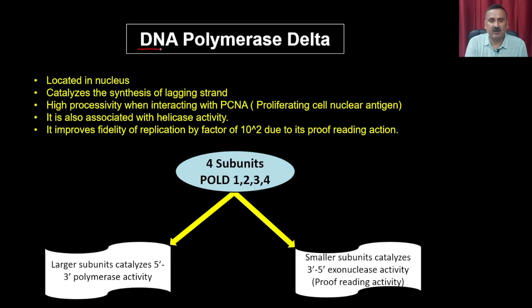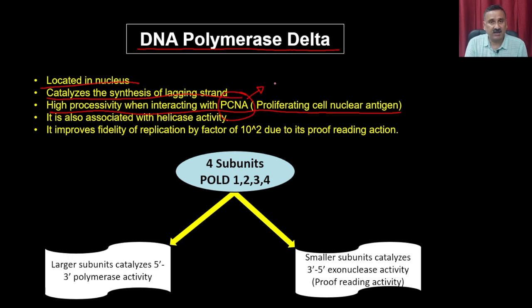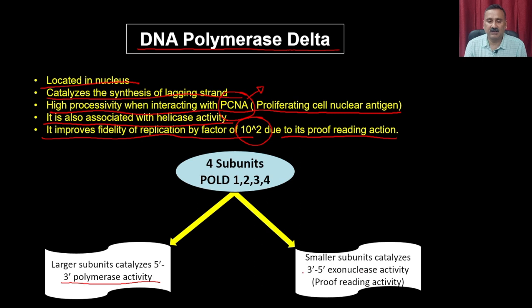DNA polymerase delta is localized in the nucleus and catalyzes the synthesis of the lagging strand. It has high processivity when interacting with PCNA — the proliferating cell nuclear antigen — which plays a critical role in DNA damage and repair. It is also associated with helicase activity and improves fidelity of replication by a factor of 10^2 due to its proofreading actions. It has 4 subunits: the large subunit catalyzes 5-prime to 3-prime polymerase activity, while the small subunit catalyzes 3-prime to 5-prime exonuclease or proofreading activity.